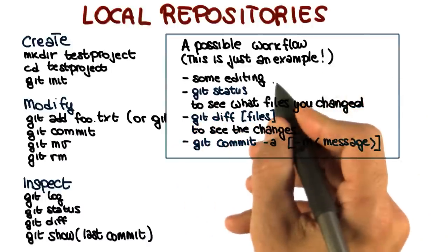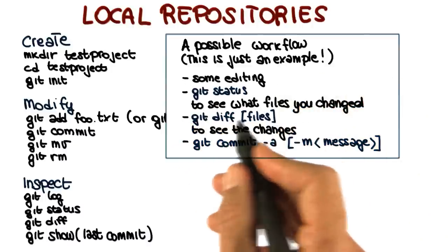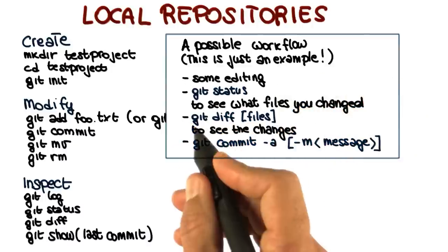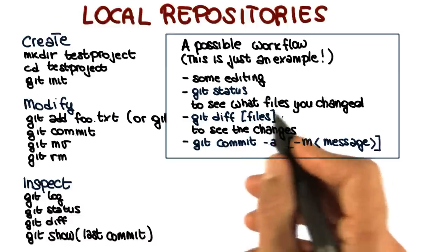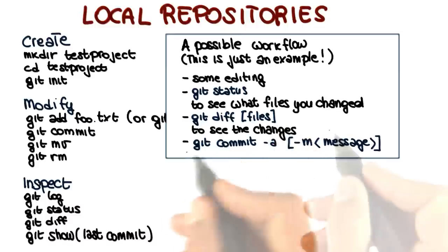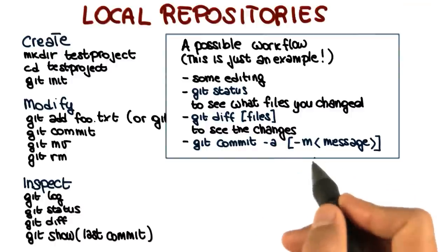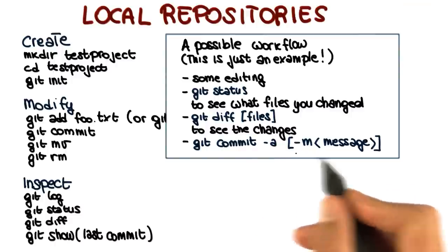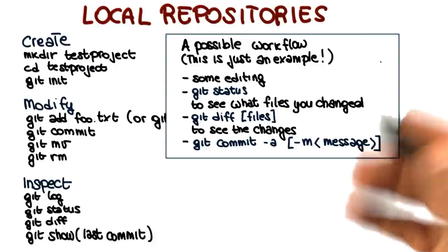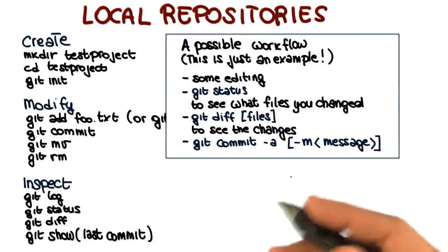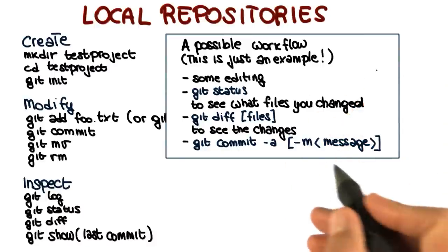So you might do some local editing. Execute git status to see what files you changed. Then you might run git diff on the files to see what are these changes. And then you can run git commit minus a to commit your changes. And in case you want to specify the commit message right away without having to go through an editor, you can also add the minus m parameter and specify the message here on the same line.